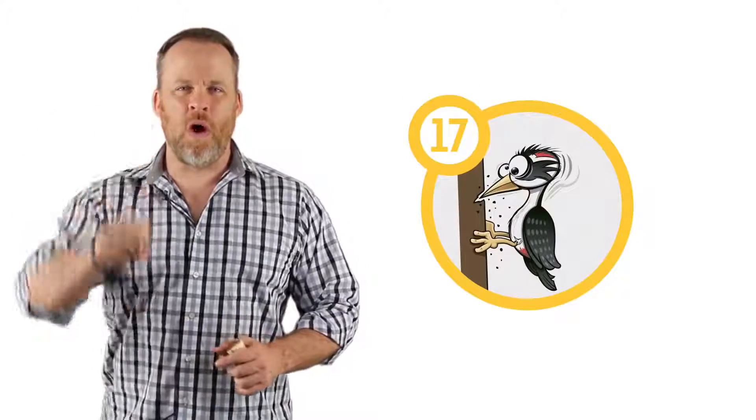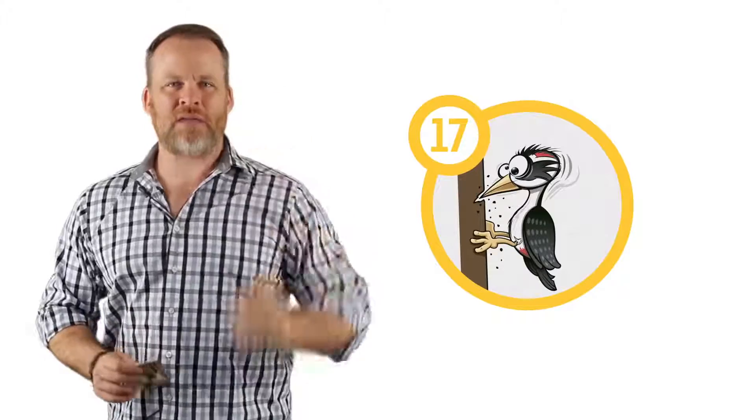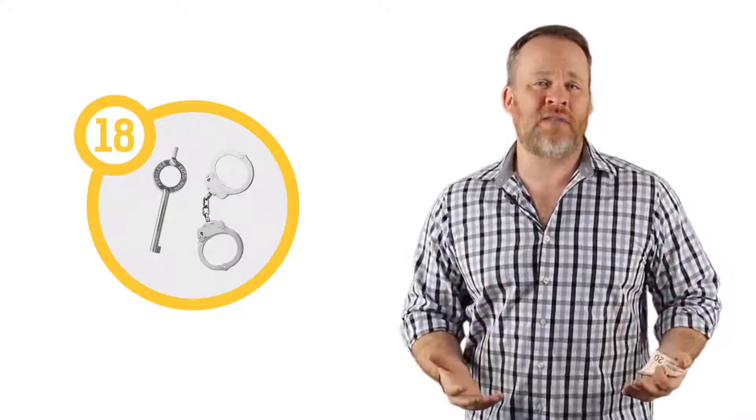Sixteen for me was a car because you got to be sixteen to get a driver's license. Seventeen I used a woodpecker because the one looked like a tree and the seven looked like a woodpecker pecking away at the tree. Number eighteen for me is handcuffs because the two circles look like the handcuffs and the one looks like the key. Eighteen was handcuffs.